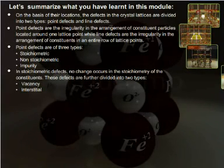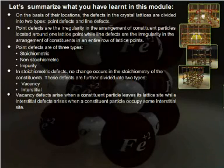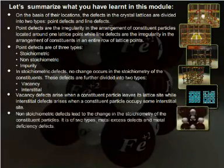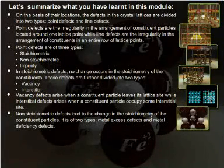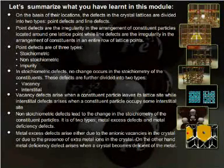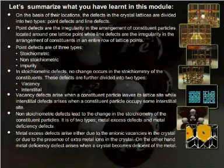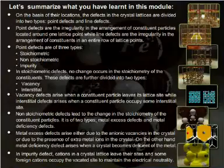These defects are further divided into two types: vacancy and interstitial. Vacancy defects arise when a constituent particle leaves its lattice site, while interstitial defects arise when a constituent particle occupies some interstitial site. Non-stoichiometric defects lead to the change in the stoichiometry of the constituent particles and are of two types: metal excess defects and metal deficiency defects. Metal excess defects arise either due to the anionic vacancy in the crystal or due to the presence of extra metal ions in the crystal. Metal deficiency defect arises when a crystal becomes deficient of the metal. In impurity defect, cations in a crystal lattice leave their sites, and some foreign cations occupy the vacated site to maintain the electrical neutrality.